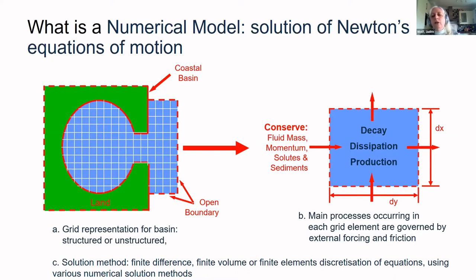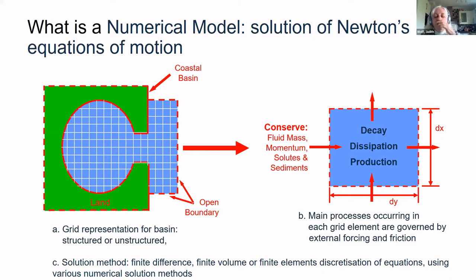Within a grid box, there are various dissipation processes going on and the water level will change. Solution methods include finite difference methods, finite volume methods, or finite elements for the discretisation of the equations. Once you've got the equations in that form, you have to solve them by various numerical methods.